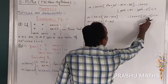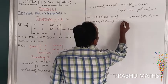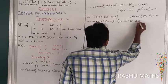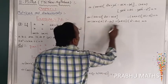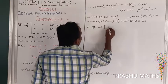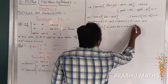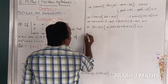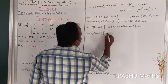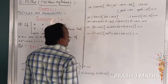Taking B squared minus AC outside as common: the remaining values are alpha into (A·alpha plus B) plus (B·alpha plus C), that equals 0. Which implies B squared minus AC into A·alpha squared plus B·alpha plus B·alpha plus C equals 0. So: B squared minus AC into A·alpha squared plus 2B·alpha plus C equals 0.